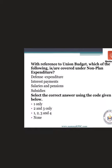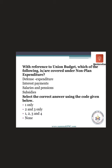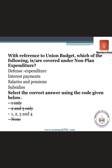Now let's solve a practice question. With reference to the Union Budget, which of the following are covered under non-planned expenditure? Defense expenditure is non-planned — if it involves asset acquisition it is capital, otherwise revenue, but either way non-planned. Interest payment is also non-planned. Salaries and pensions are also non-planned. And subsidies are also non-planned. So all four are non-planned expenditure — option C.